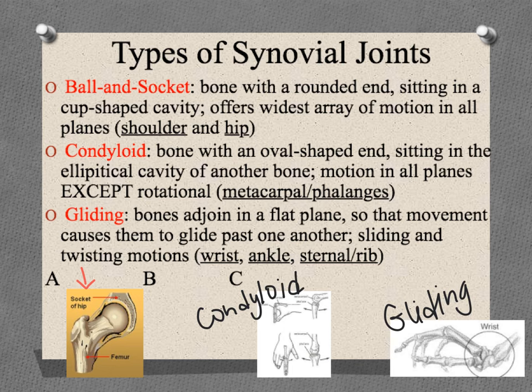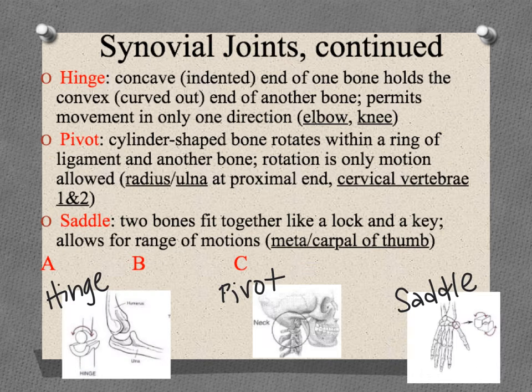The gliding joint is found at the wrist and at the ankle. There are several flat, short bones stacked near one another side to side and front to back. The gliding motion allows them to move past one another, letting you point your hand toward the sky or the floor and move somewhat side to side or rotate — but again, more limited than the ball-and-socket.